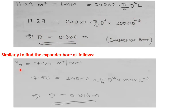Similarly, for the expander: V4 = 7.56 m³/min = 240 × 2 × (π/4) × D² × L. Solving gives D ≈ 0.316 m, or 316 mm for the expander bore.